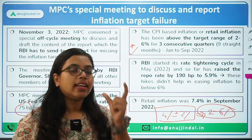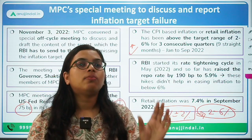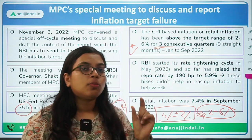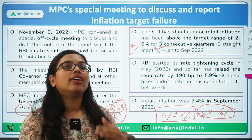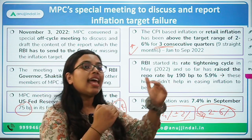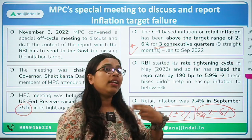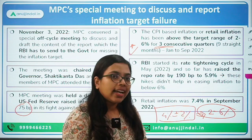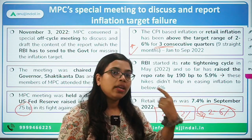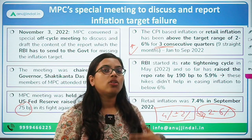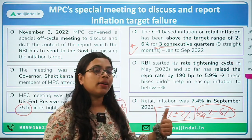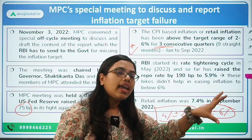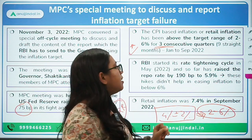The Act says that if the Monetary Policy Committee fails to maintain the inflation target for 3 consecutive quarters, the MPC is required to hold a special meeting to list down the reasons for the failure, what remedial actions can be taken to remove these failures, and in what time these failures will be resolved. This report must be submitted by RBI to the central government.